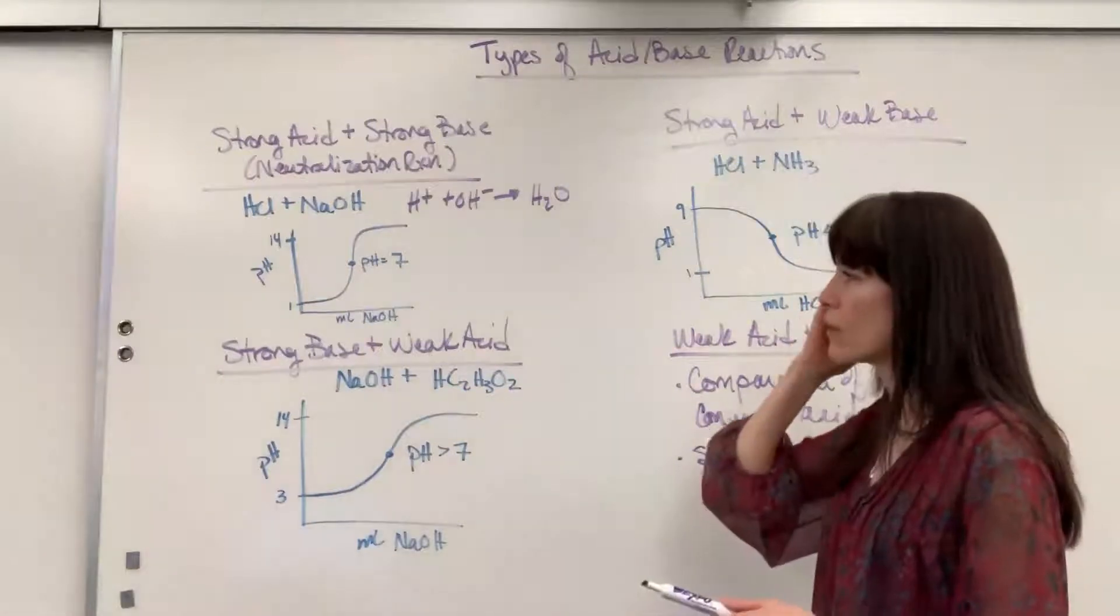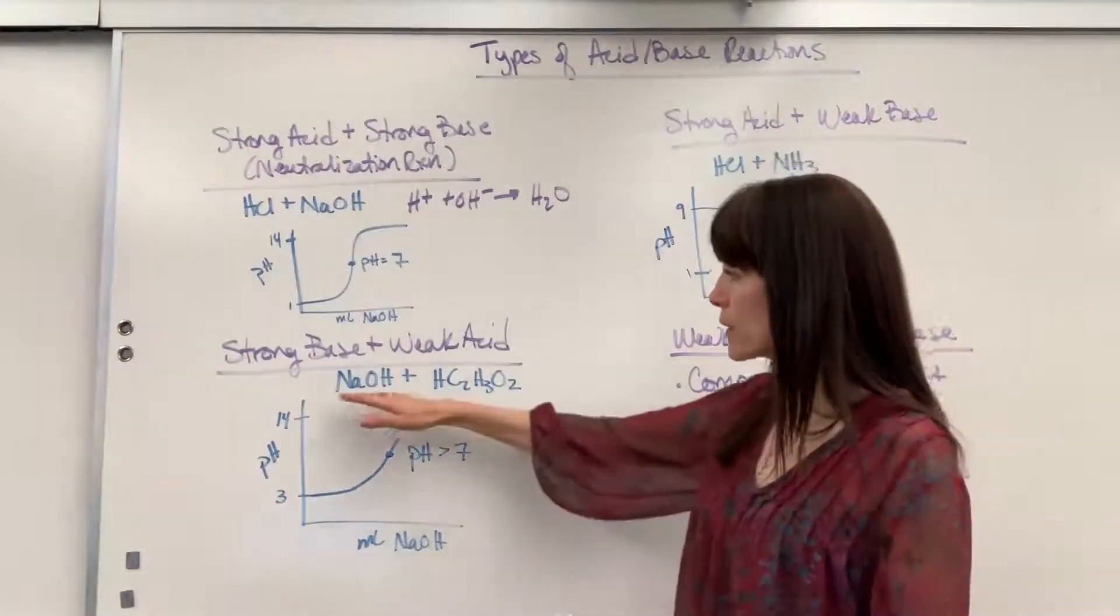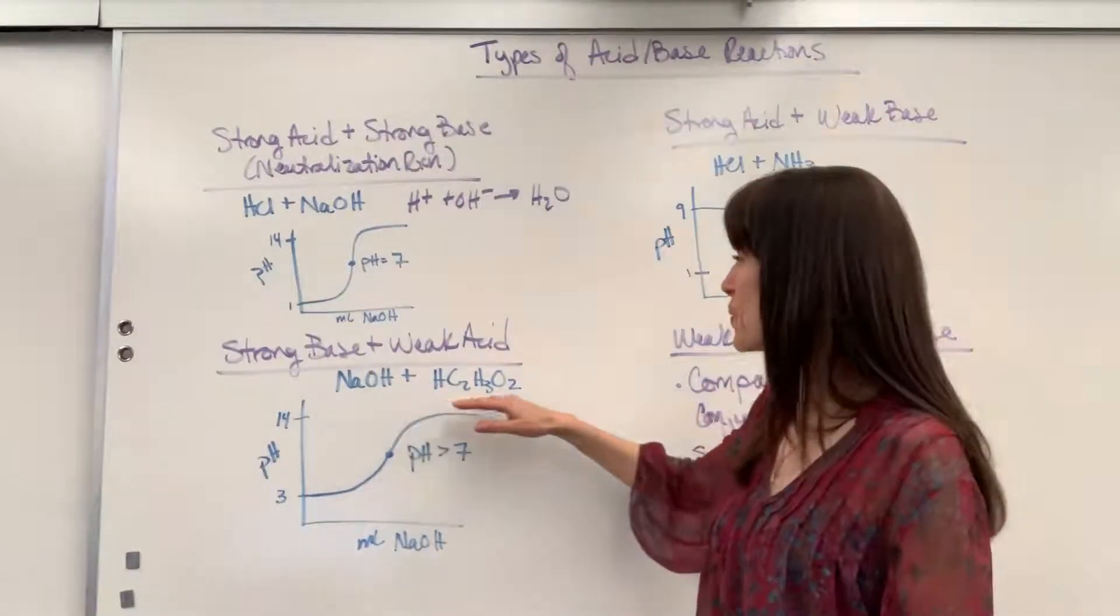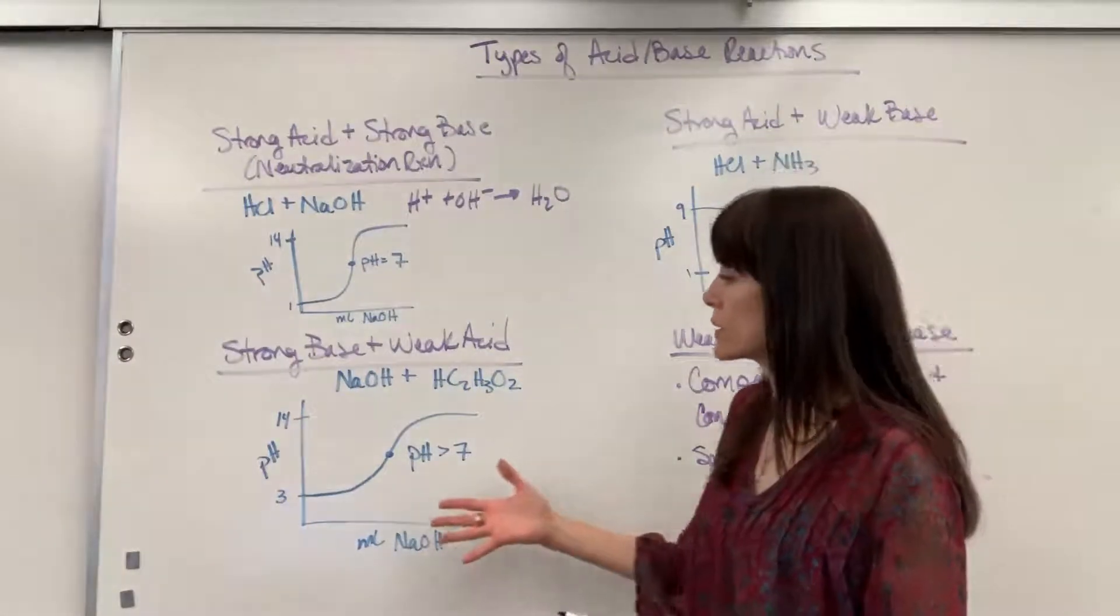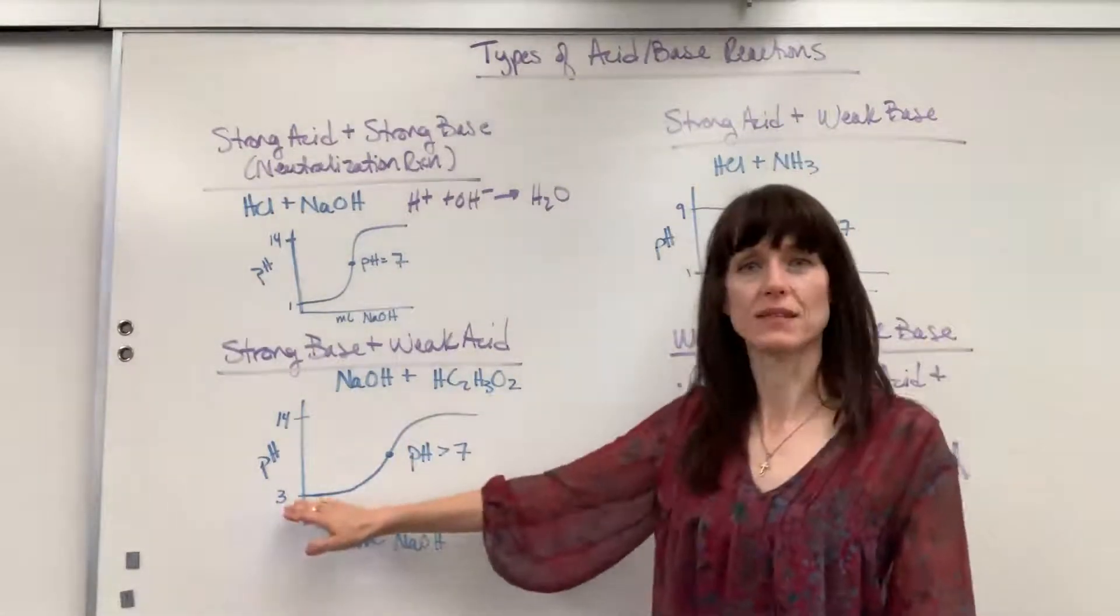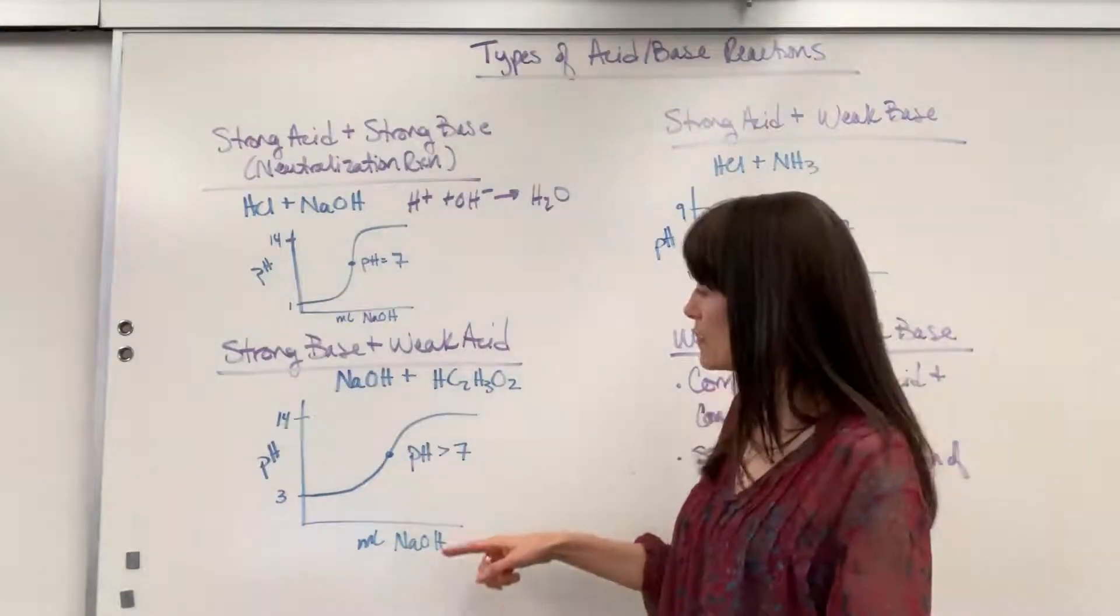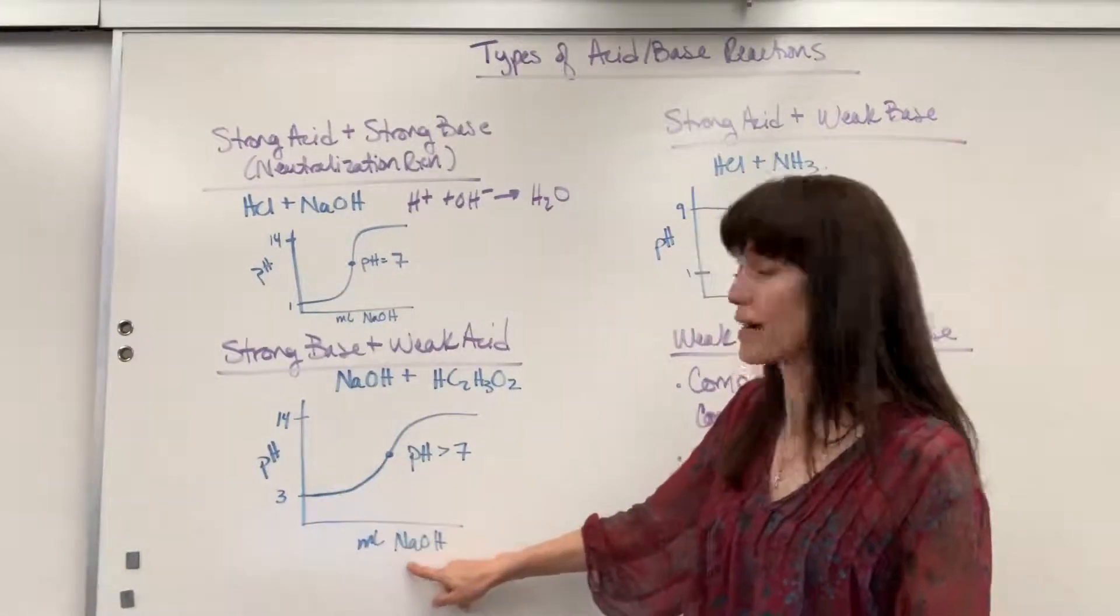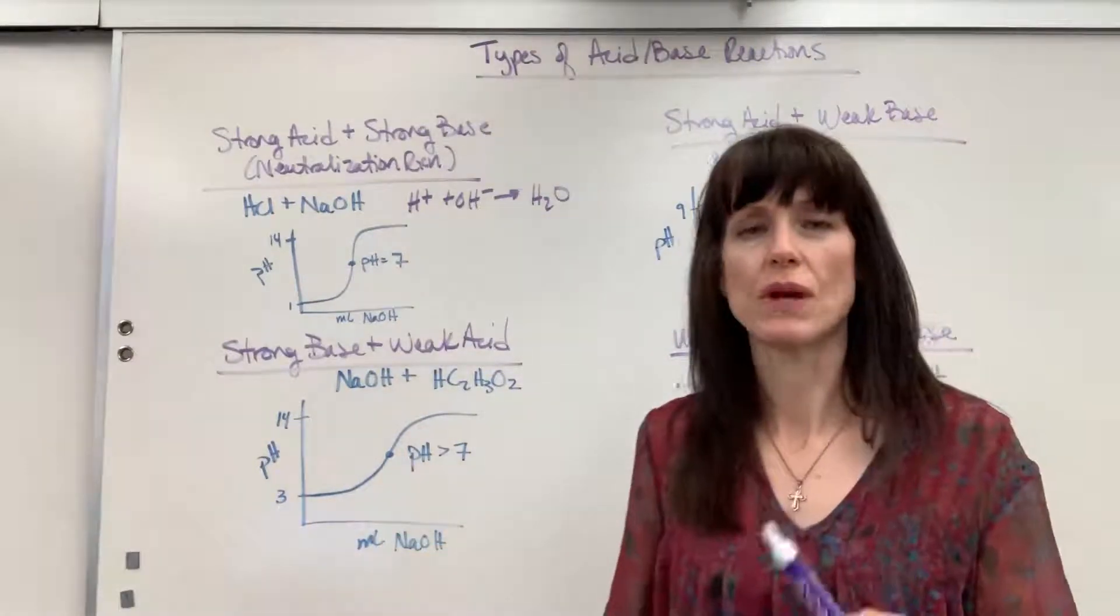Okay, now let's come down here, where we have a strong base and a weak acid. So I gave an example here. A strong base is going to be the sodium hydroxide, and the weak acid is going to be the acetic acid. So we're going to start with our acetic acid. A little bit weaker acid is going to be a pH of about 3. So we go ahead and begin adding our strong base.